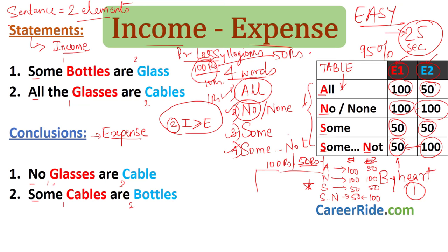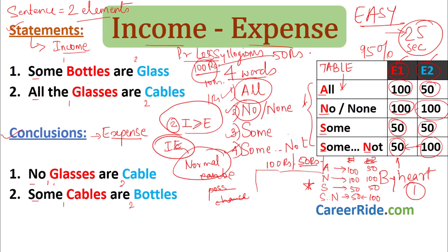Whenever you get the question, first check the conclusions for words like 'can be', 'possibility', 'chance'. If there are none, it is a normal sum. This is a normal sum to be solved by income expense method. Take the first statement: 'Some bottles are glass.' The first word is 'some'. For some, we donate 50 rupees to element 1 and 50 rupees to element 2. Next sentence: 'All the glasses are cables.' For 'all', we give 100 to element 1 and 50 to element 2.